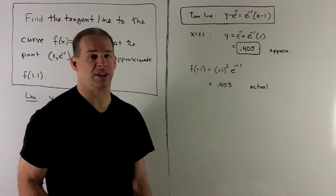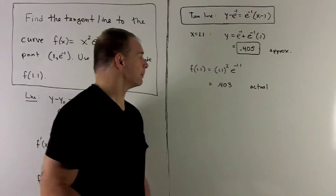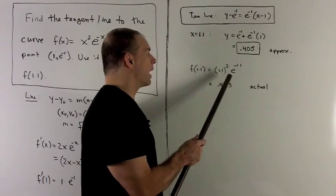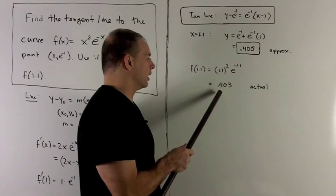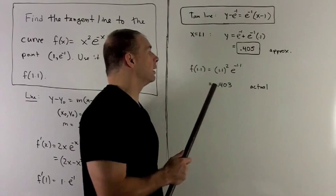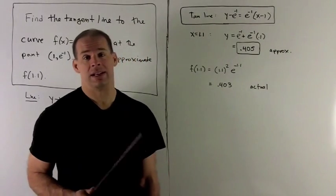To see the actual value, I just stick 1.1 into the function. So that's 1.1² × e^(-1.1), and what comes out of the calculator is 0.403. So we see, not too bad.